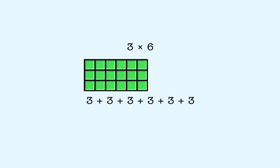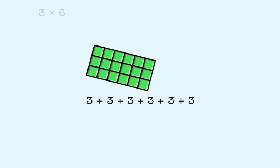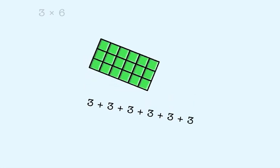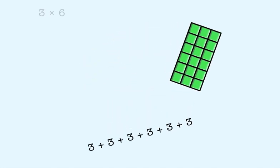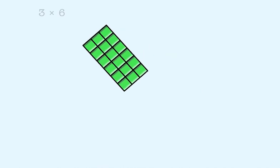Watch what happens when we rearrange this array. This new array is the same array as we had before, just rotated. However, this array represents the repeated addition 6 plus 6 plus 6. In other words, this array represents the multiplication 6 times 3. So 3 times 6 and 6 times 3 are equal.